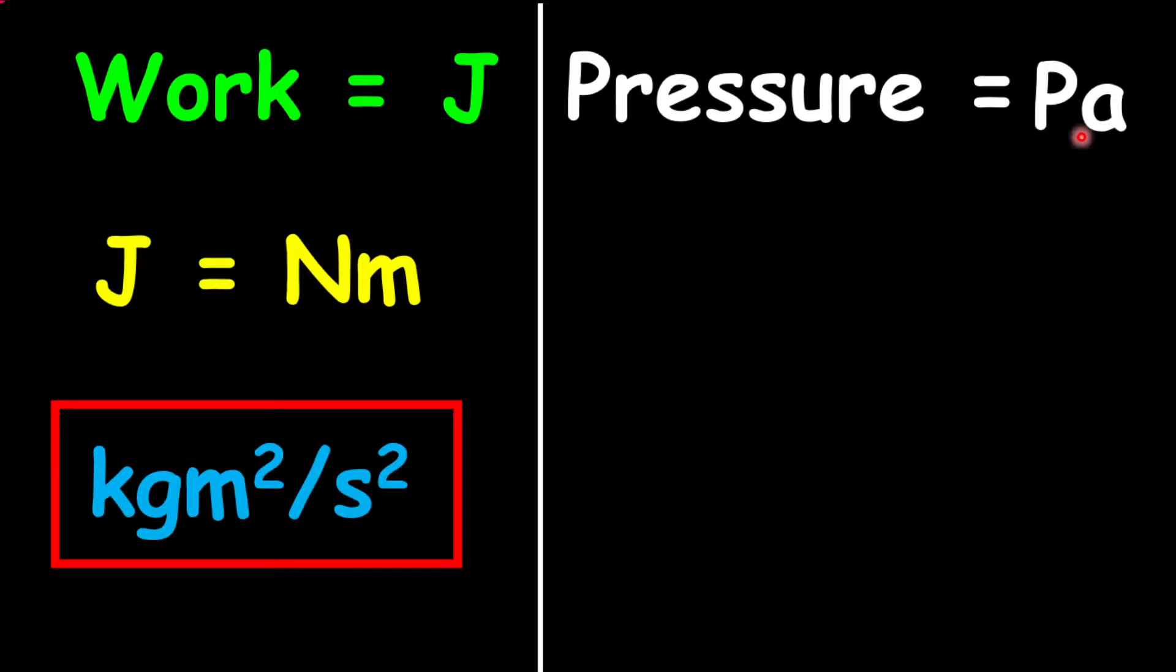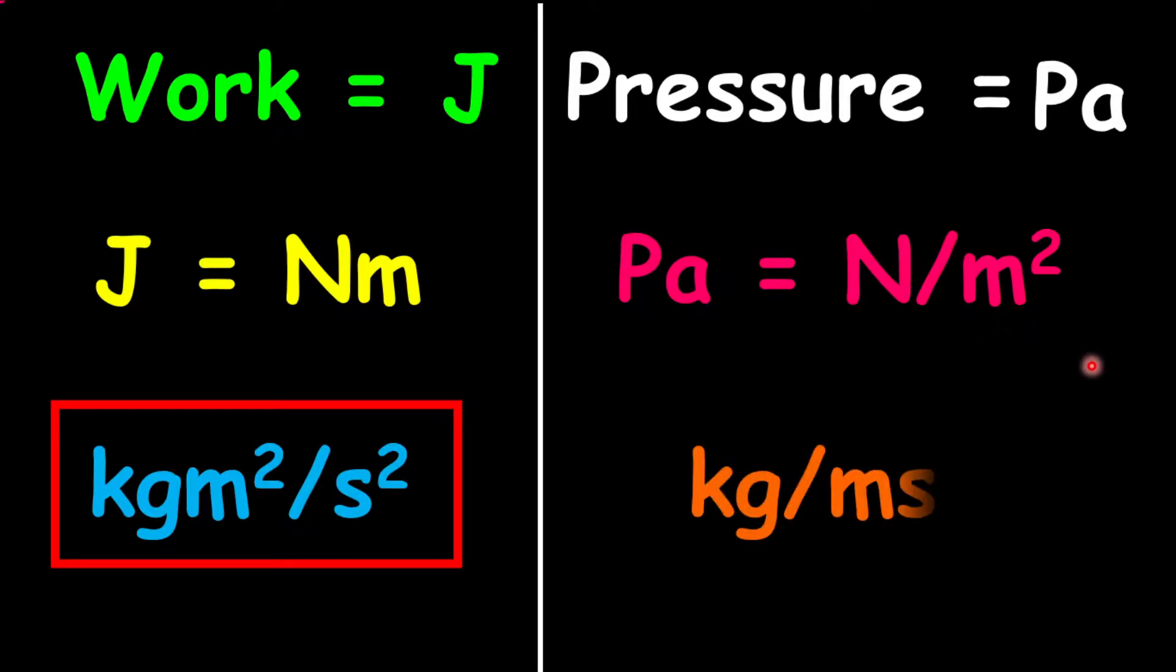Pressure is measured in Pascal. One Pascal is equivalent to one newton per meter squared. One newton per meter squared is equivalent to one kilogram per meter per second squared. Which of these units do you think best represents the base units used to calculate pressure? Absolutely, kilogram per meter per second squared gives more information about the base units involved.